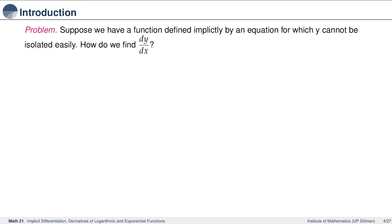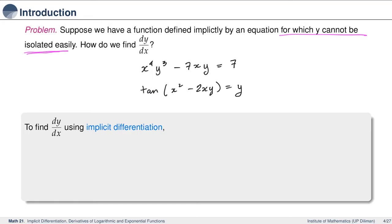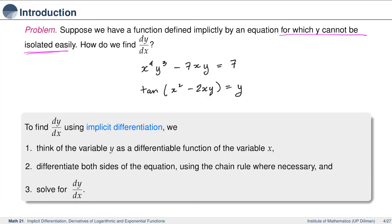Suppose instead we have a function defined implicitly by an equation for which y cannot be isolated easily. How do we find the derivative of y with respect to x then? Suppose we have equations like x to the 4 times y cubed minus 7xy equal to 7, where it's quite difficult to solve for y, or equations like tangent of quantity x squared minus 2xy equal to y. So in these cases we use the method of implicit differentiation. First, think of y as a differentiable function of x. Next, differentiate both sides of the equation and use the chain rule where necessary. Lastly, simplify and solve for dy over dx.